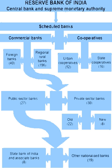Loan deeds were called urnapatra or urnapana. The dharmashastras also supported the use of loan deeds. Kautilya has also mentioned the usage of loan deeds. Loan deeds were also called urnalakaya. Later during the Mauryan period, an instrument called adesha was in use, which was an order on a banker directing him to pay the sum on the note to a third person, which corresponds to the definition of a modern bill of exchange. The considerable use of these instruments has been recorded. In large towns, merchants also gave letters of credit to one another.